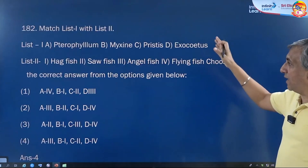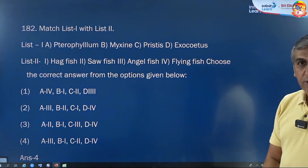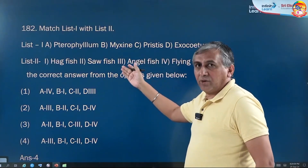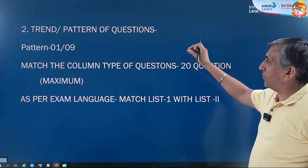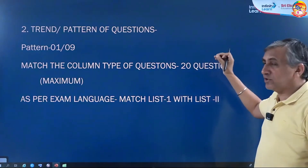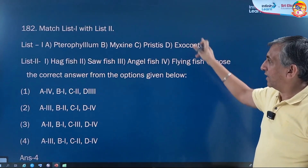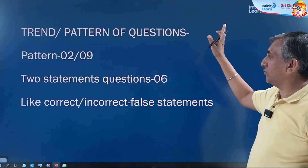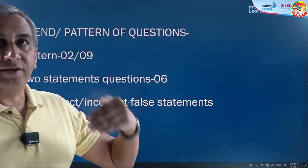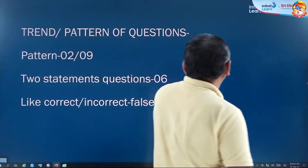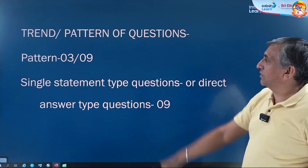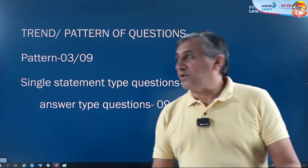For example, a match-the-column question from animal kingdom: they give you the name of the animal and ask for its common name. PYQs help you identify variety. The first type of question to solve maximum is match-the-column. The second type is the two-statement question — they give you two statements where one is correct and one is incorrect — their weightage is approximately six questions.